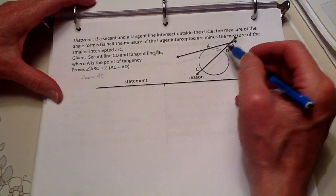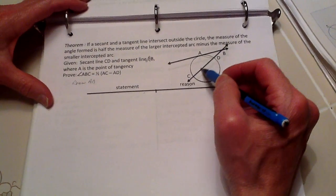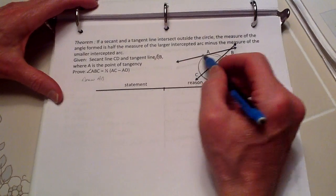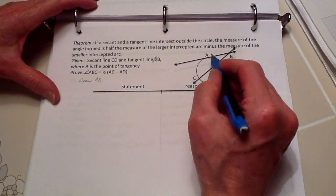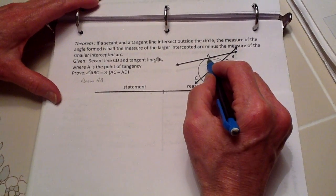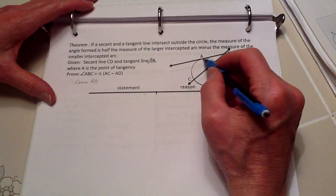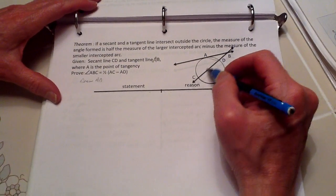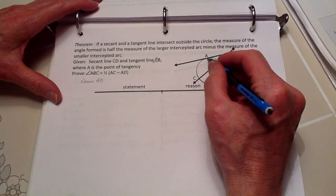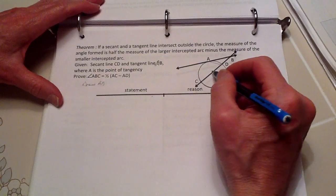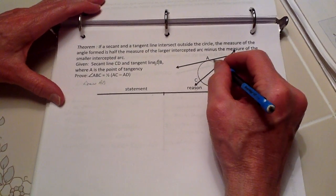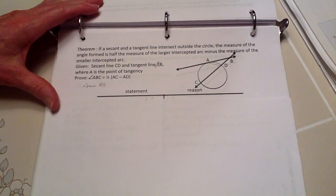Essentially, what we're talking about: we have the secant line through here, and we have the tangent line here, intersecting at point of tangency A. Now, to prove that this angle ABC is going to equal one-half the measure of this arc minus the measure of that arc.